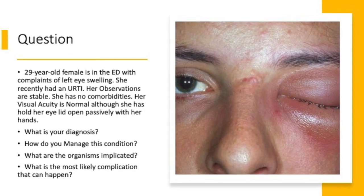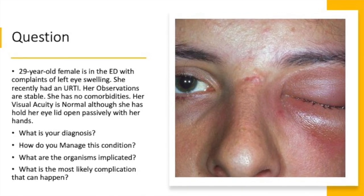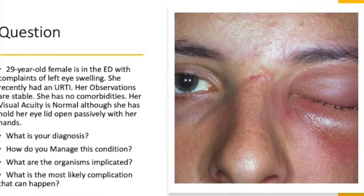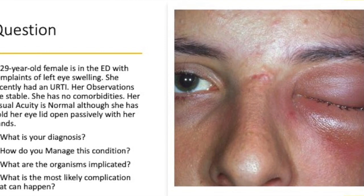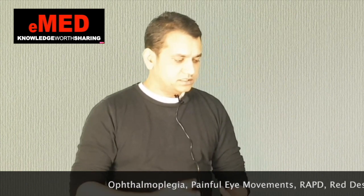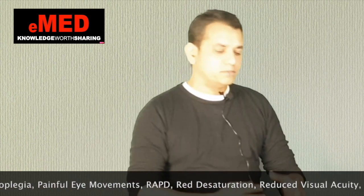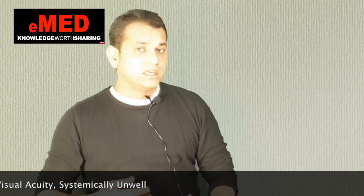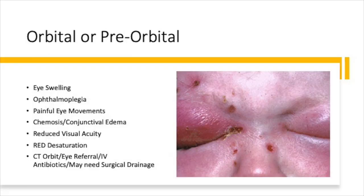Revisiting the 29-year-old woman: visual acuity is normal, no comorbidities, and she can hold the eyelid open passively — this is preseptal cellulitis. If there had been ophthalmoplegia, reduced visual acuity, red desaturation, or painful eye movements, the diagnosis would be orbital cellulitis. Management of preseptal cellulitis: oral antibiotics if she is well; IV antibiotics if not. Antibiotics should cover Staph aureus, Strep pneumoniae, and Haemophilus influenzae.